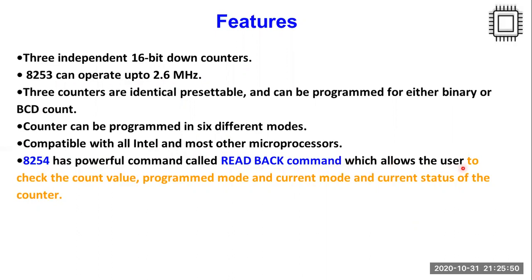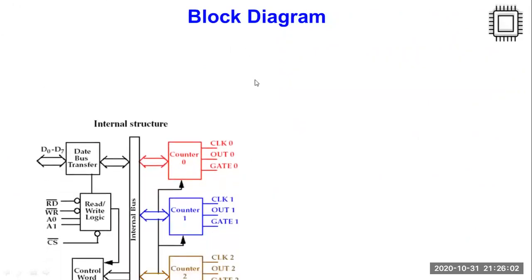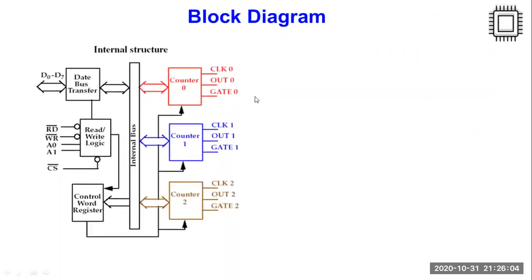8254 has a more powerful command which is known as readback command. This readback command allows the user to check the count value, check the programmed mode, current mode of operation, as well as the current status of the counter. Looking into the internal block diagram of this IC...